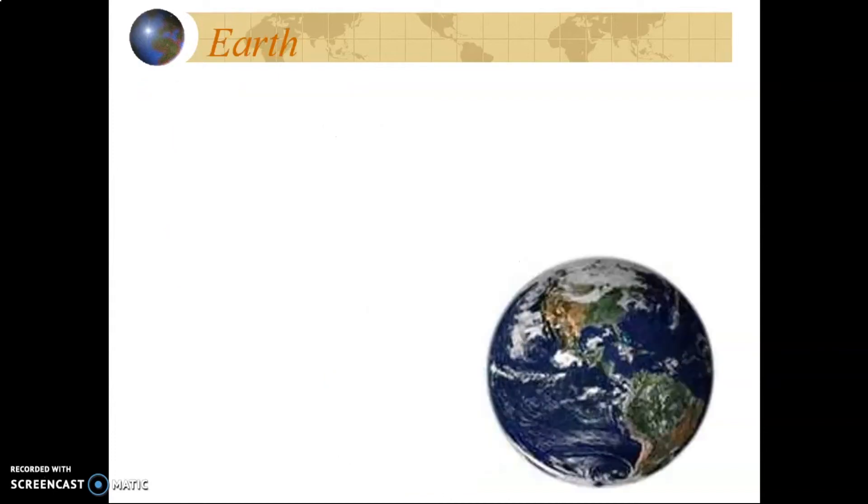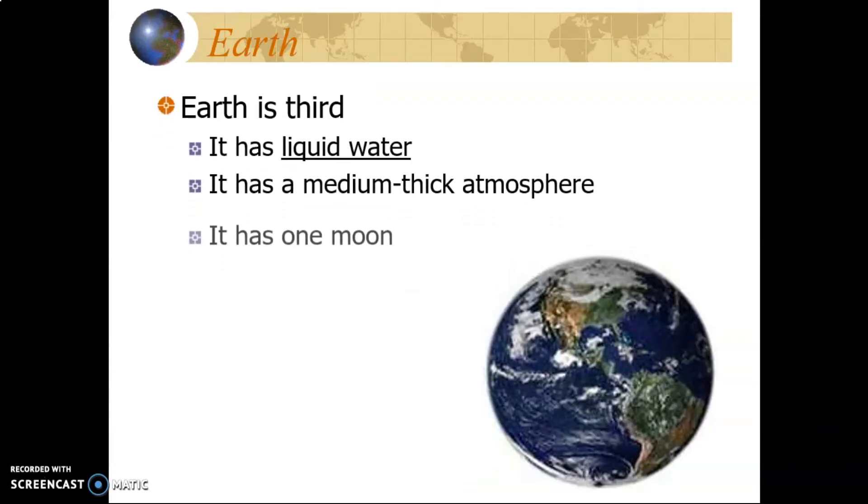You might recognize this third planet because it is our own. As you may know, Earth is perfectly positioned so that it contains liquid water, along with many other unique characteristics we will cover in future videos. The presence of water is especially important as we will discuss later. Earth has a medium thick atmosphere, perfect for protecting us from the Sun, along with letting in enough light for plants. We have one moon, which is about a third the size of Earth. Earth is the focus of the rest of this video series.